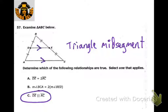This is a triangle midsegment. A couple things are true: we know this side is parallel to the other, this length is half of that length, and there are corresponding angles in the mix. What's true is DE is parallel to AC.